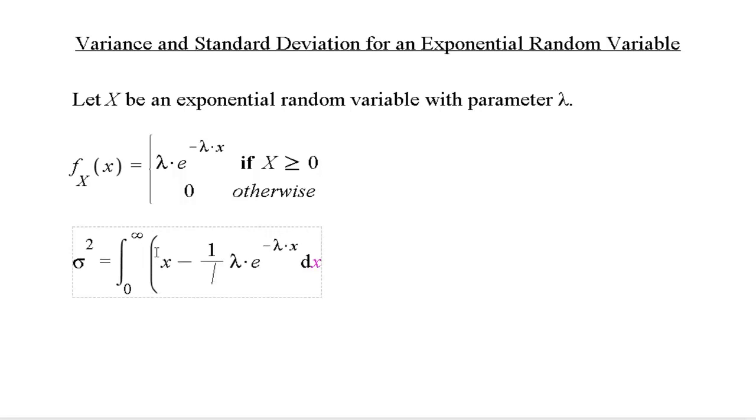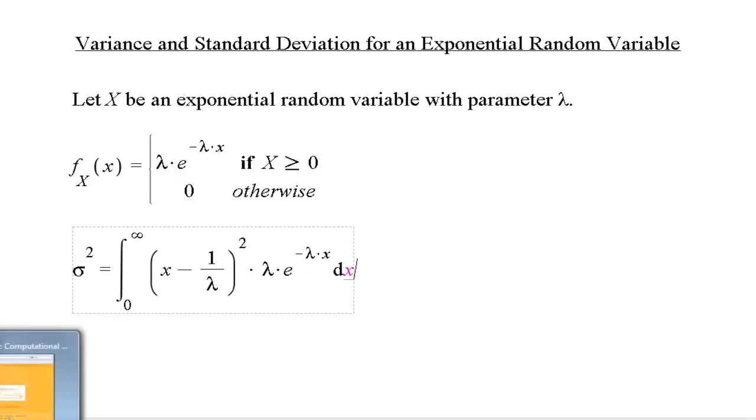You'll need to recall that the mean mu for an exponential random variable is 1 over lambda, where lambda is the expected number of events in your time interval. Here's the integral for our variance. I'm going to compute this with Wolfram Alpha.